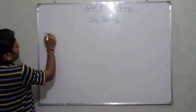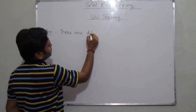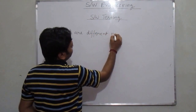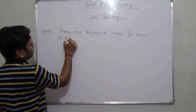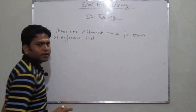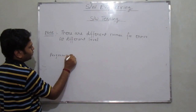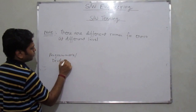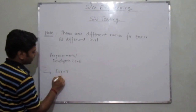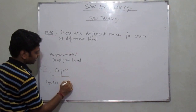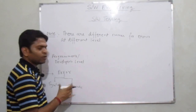There are different terms, or you can say different names, for an error at different levels. At the programmer's level, or you can say the developer's level, the error is basically known as an error — which can be a syntax error, a semantic error, or all other kinds of errors.